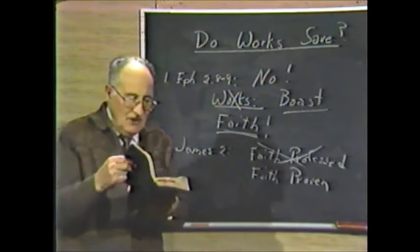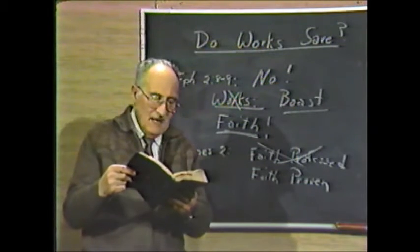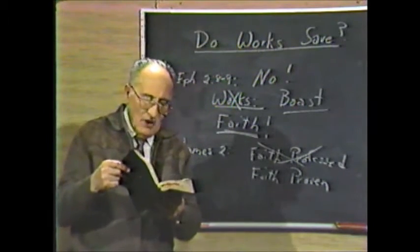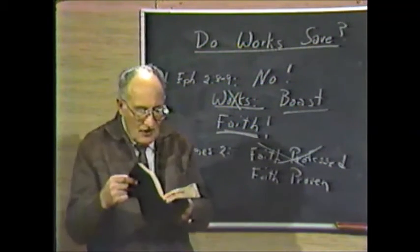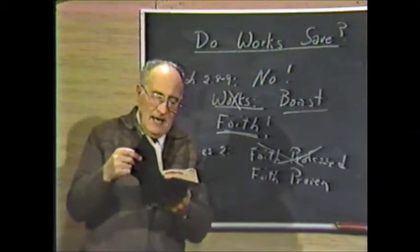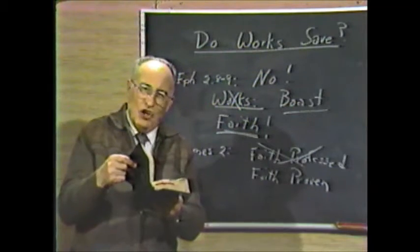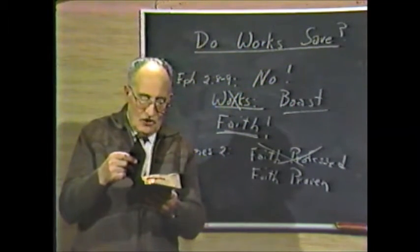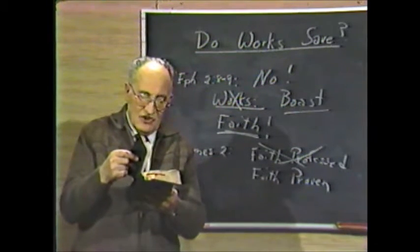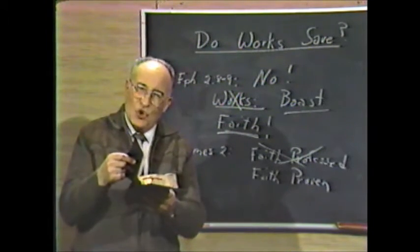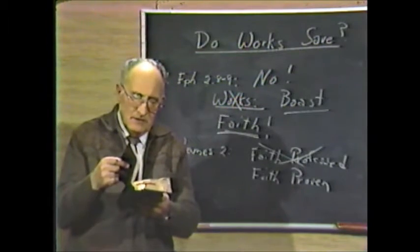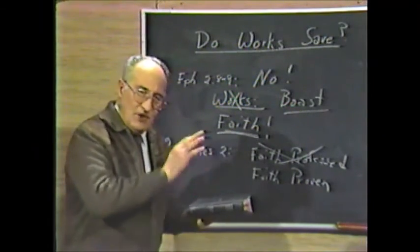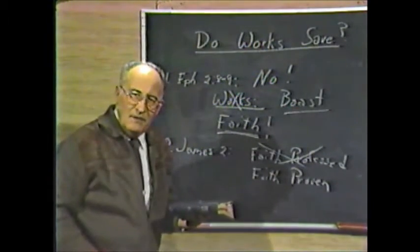Now then let me just read hurriedly verse 21 through 26. Was not Abraham our father justified by works when he had offered Isaac his son upon the altar? Seest thou how faith wrought with his works, and by works was faith made perfect and complete? And the scripture was fulfilled which said Abraham believed God, and it was imputed unto him for righteousness and he was called the friend of God. You see then how that by works a man is justified, and not by faith only. Likewise also was not Rahab the harlot justified by works when she had received the messengers? For as a body without the spirit is dead, so faith without works or proof of it is dead also.